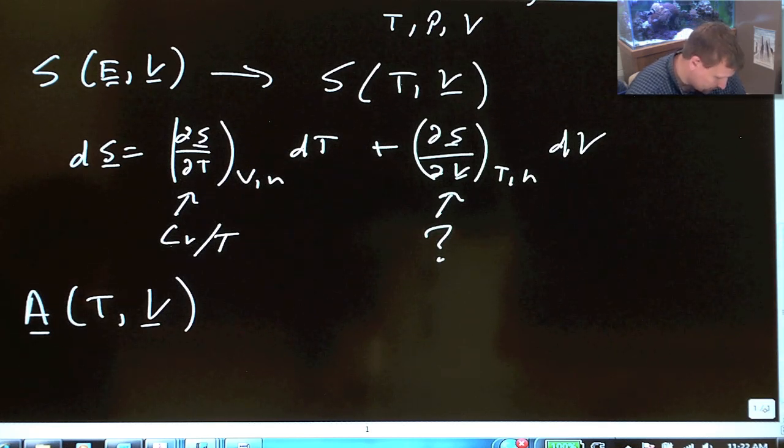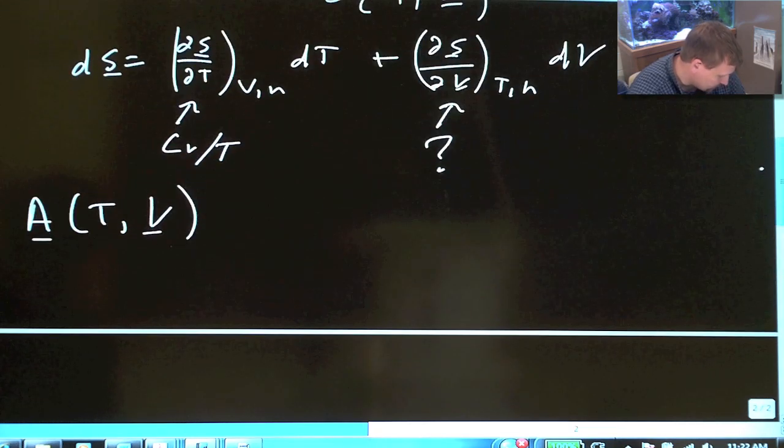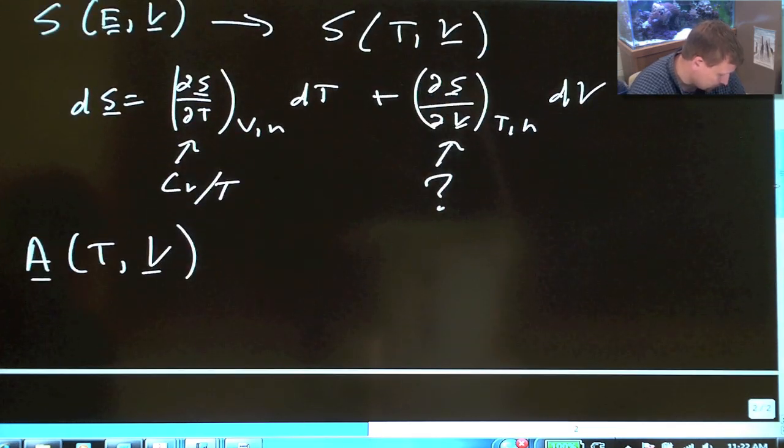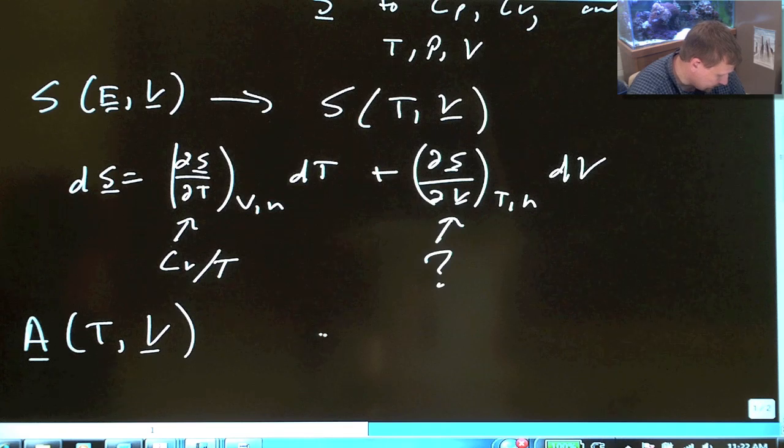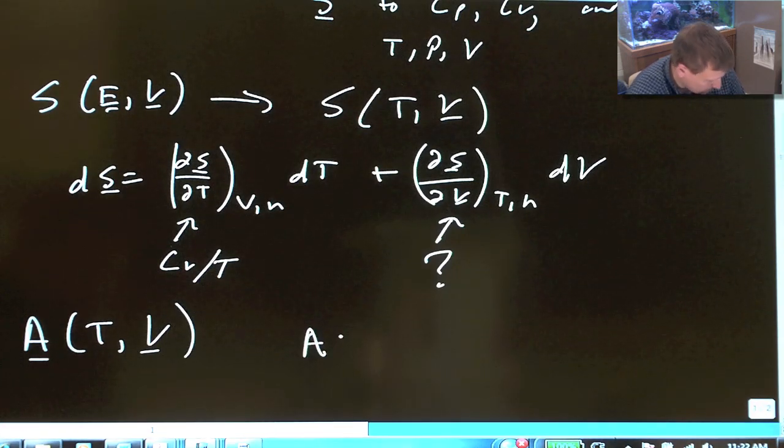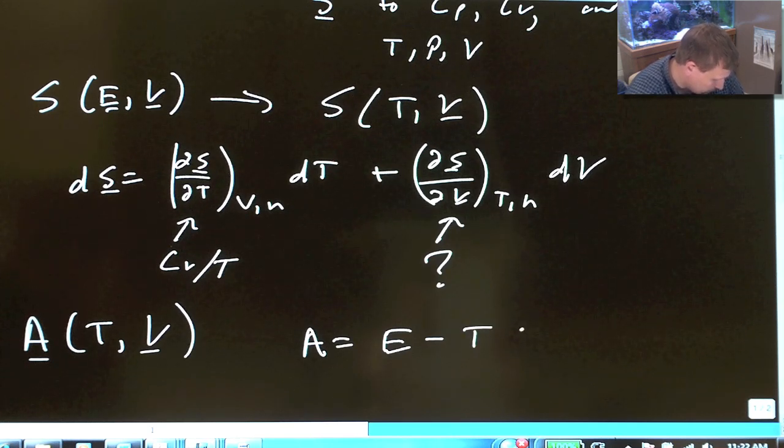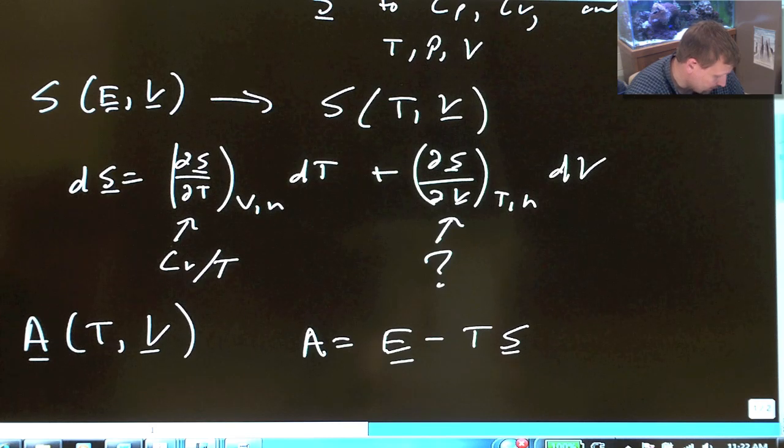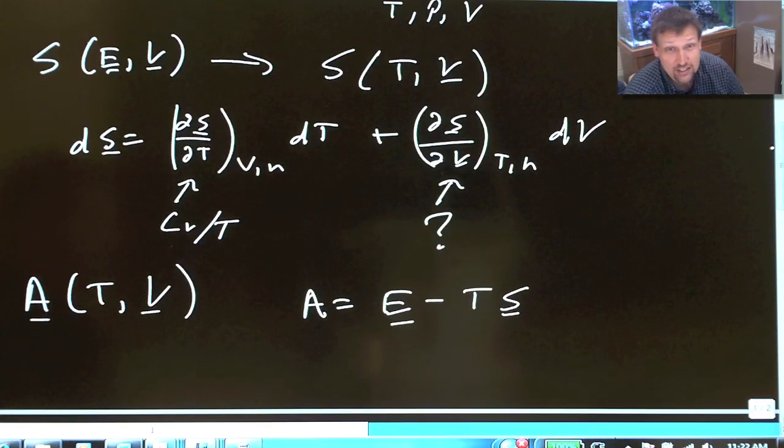So, if we begin with the Helmholtz free energy, we can write this differential. Well, A is actually achieved by the Legendre transform of energy with respect to entropy to get rid of this entropy dependence. So, A equals E minus TS, as you can see in the other videos.